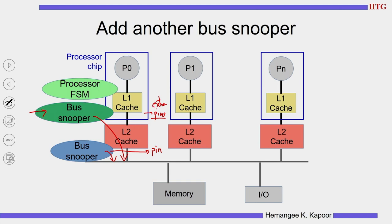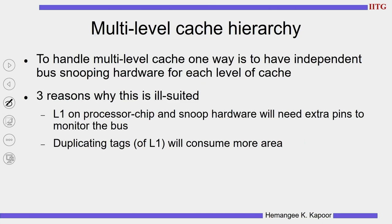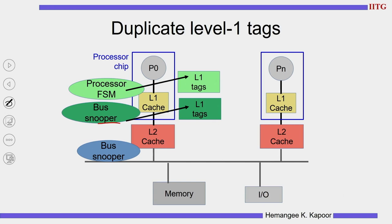Adding another bus snooper would also consume more area because I will have to duplicate the tags of L1. The snooper as well as the processor are going to do tag comparisons, so having duplicate tags helps so that the processor is not stalled during comparison. The green bus snooper is given a dedicated tag array for L1, and the processor side FSM also gets its own tag. These are the duplicate tags added — it helps latency but again adds to area. So duplicating L1 tags is performance-wise okay but costly in area.